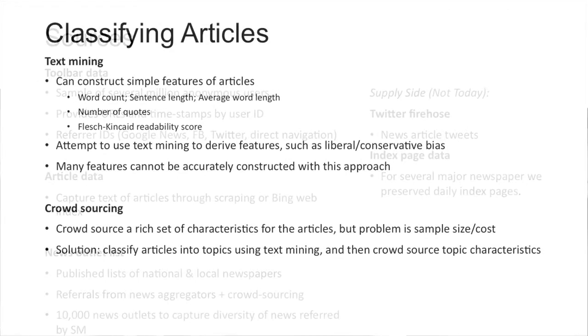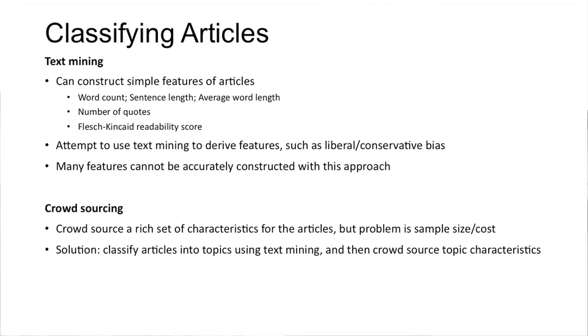In terms of classifying articles, basic text mining is what most people do — we construct features of articles and use text mining to derive the features. What we found is that many features cannot be accurately constructed with this approach; the error rates were too high and they weren't capturing what we were looking for. So we use crowdsourcing to get a rich set of characteristics for the articles, but the problem there is cost and sample size. Our solution is to classify groups of articles into topics — roughly two-thirds of page views can be classified into roughly 200 topics using a pure text mining method.